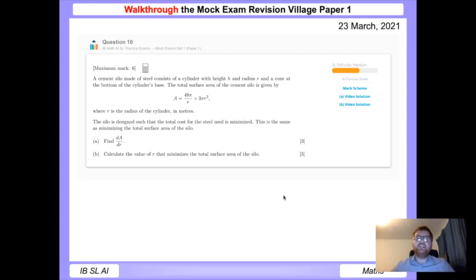First of all, we need to find the derivative of the function given, dA by dr. This is a good chance to show the differentiation skills you've learned on your course. Now before I differentiate, one thing you should always try to do is write your function in terms of index notation. In this case, we can rewrite the first part here as 48π r to the power of minus 1. Remember, 1 over r is the same as r to the power of minus 1. You'll see why this is useful when we come to differentiate.